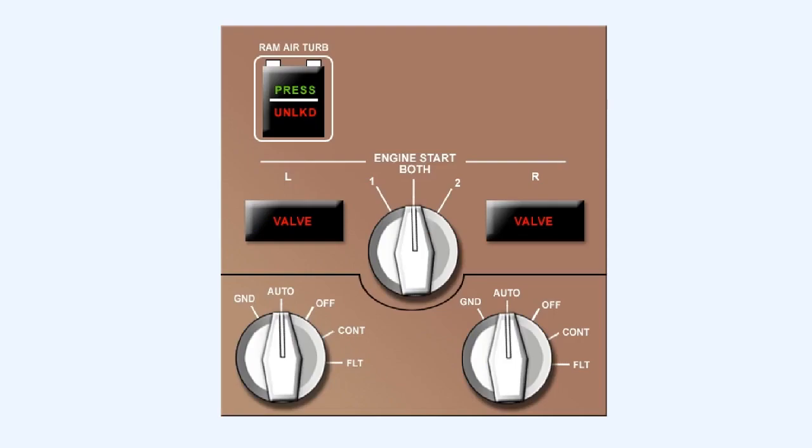Some aircraft have an automatic ignition system. If an aircraft stall is detected, the aircraft stall warning system will automatically select the continuous ignition system.